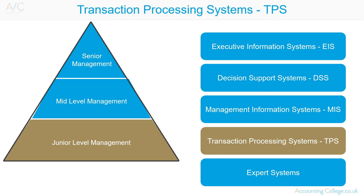Once data is entered into a transaction processing system, it can be easily manipulated to form information. For example, once you have recorded sales for the organisation with a TPS, it is easy to look at the information by the number of sales to specific customers, number of sales at specific times and dates, or to see which customers owe the organisation money and so forth.